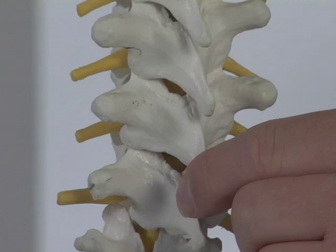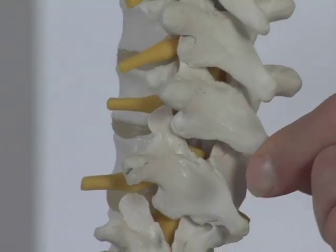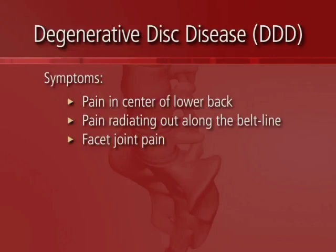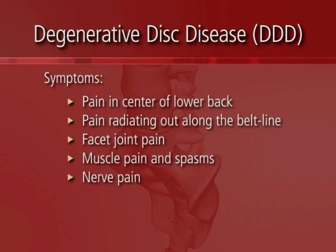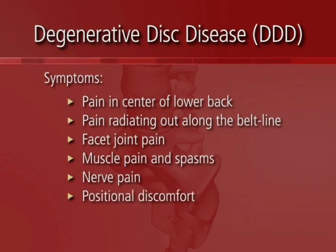You'll have joint pain in the facet or Z joints of the spine. As the muscles try to splint and get tight to try to stabilize the spine, you'll get muscle pain and muscle spasms. You can also, with narrowing of the spaces around the nerves because of collapse of the spine with the wear and tear, have nerve pain, which can radiate down the leg, even past the knee towards the foot or the ankle.